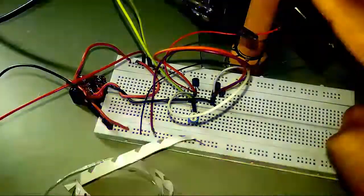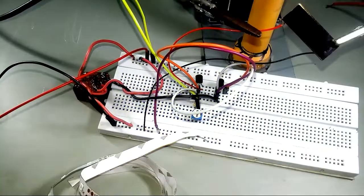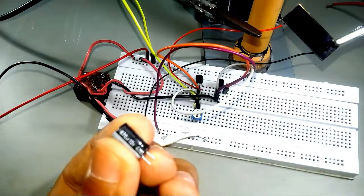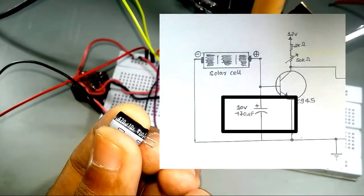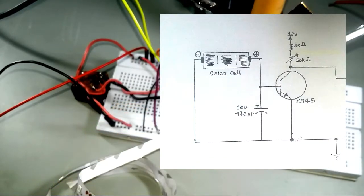However, the fluctuations in solar voltage may lead to unwanted oscillation. Such oscillation can be removed by adding a capacitor to the output of the solar cell. This way the capacitor restricts the sudden change in voltage.